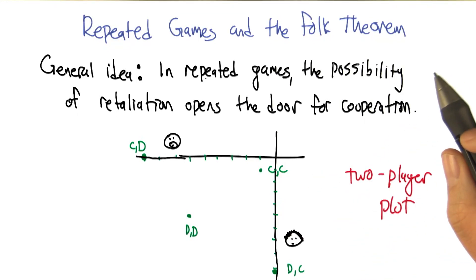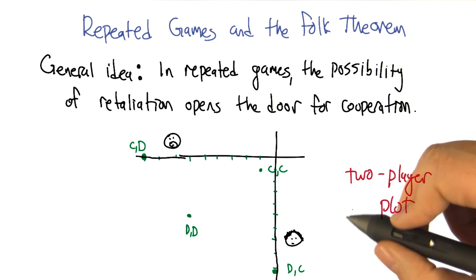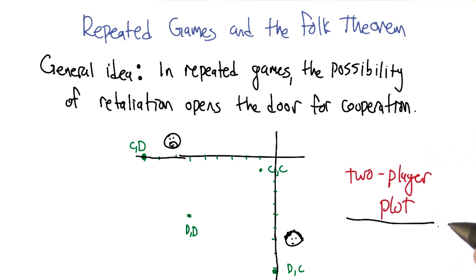The thing that I find most useful in trying to understand the folk theorem and what it says and how it works is a thing that I call a two-player plot. I don't know if other people have other names for it, but this concept is out and often discussed. I just don't know what it's called, but here's the idea of it.